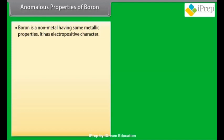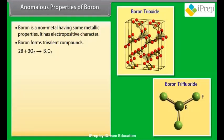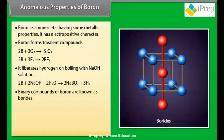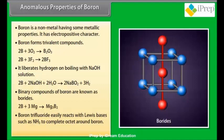Anomalous properties of boron: boron is a non-metal having some metallic properties. It has electropositive character. Boron forms trivalent compounds. It liberates hydrogen on boiling with NaOH solution. Binary compounds of boron are known as borides. Boron trifluorides easily react with Lewis bases such as NH3 to complete the octet around boron.